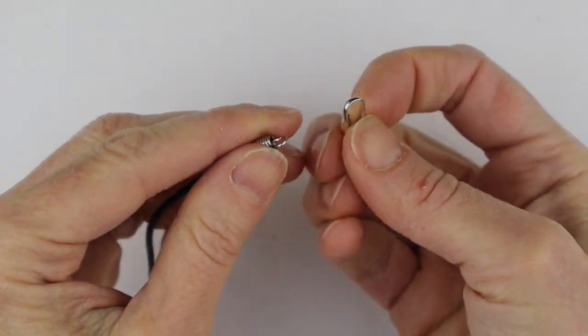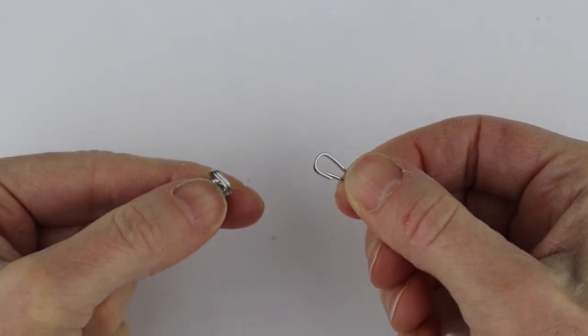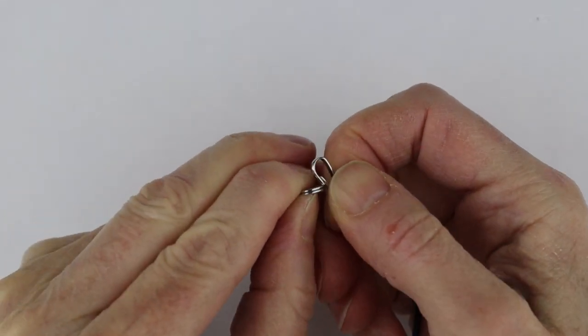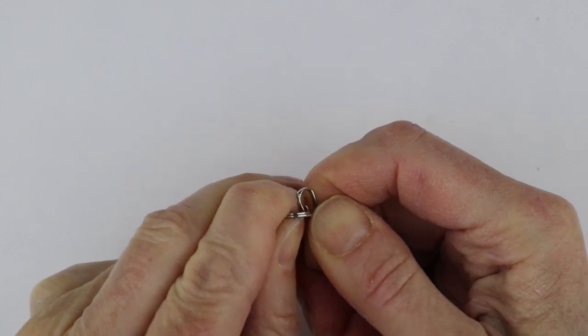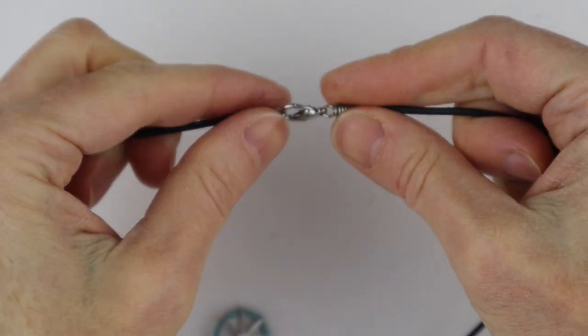For the other end you could use a lobster clasp or just one of these basic clasps. You just stick it in there and there you have a very simple clasp for your necklace that just goes in like that. You can use the lobster clasp and just attach it with a jump ring.